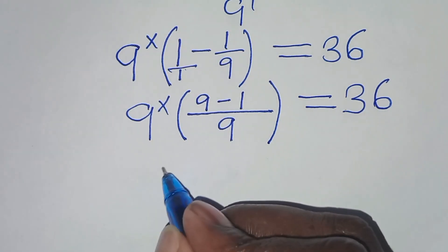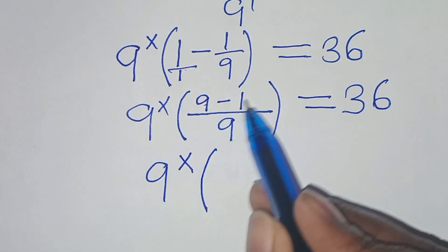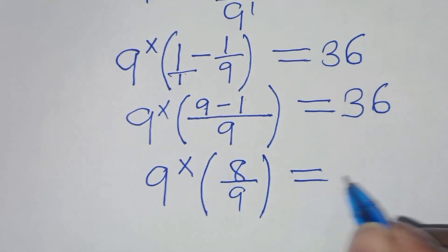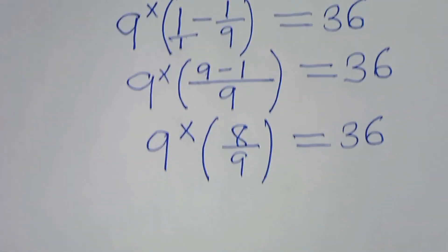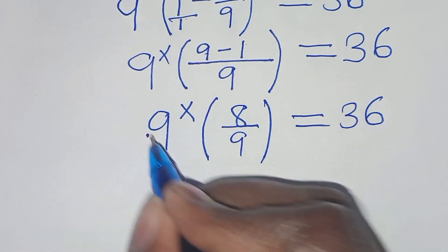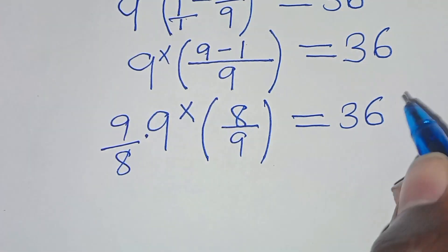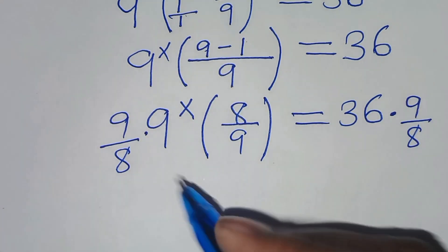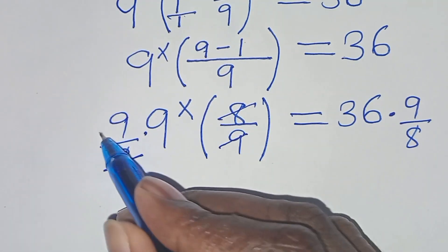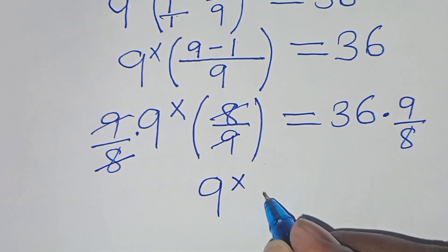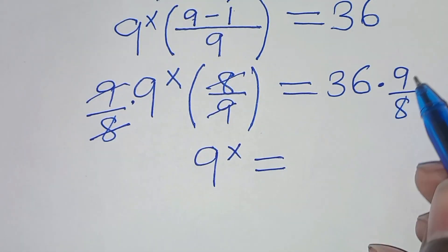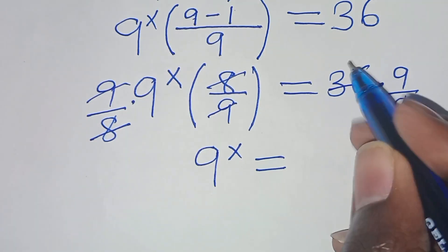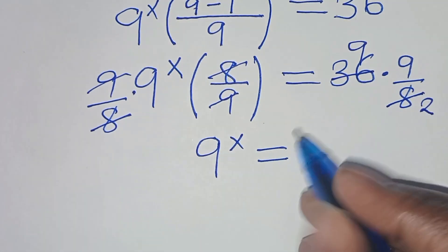From here we have 9 to the power of x times the parentheses 9 minus 1, which is 8, over 9, equal to 36. The next step: let's multiply both sides by 9 over 8. Simplifying, we have 9 to the power of x equals 36 times 9 over 8. We simplify: 36 divided by 4 is 9, and 8 divided by 4 is 2, so 9 times 9 is 81 over 2.